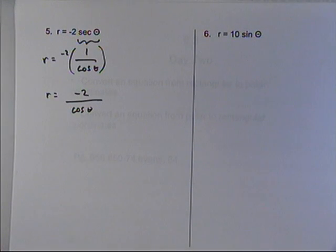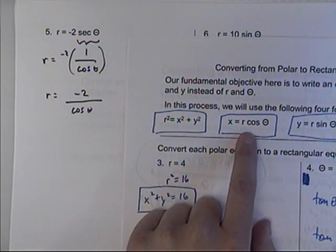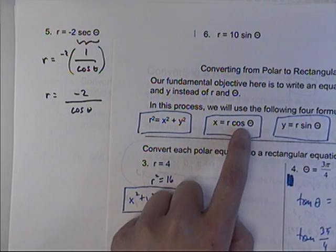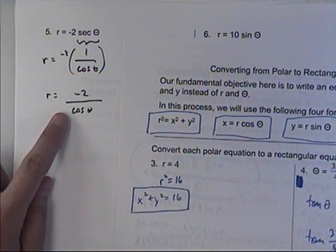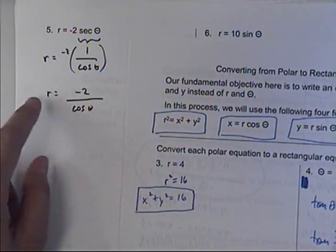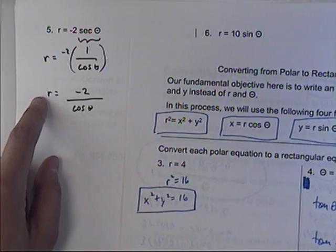Now, if you look at the formulas on the previous page, up here at the top, if I want to get to x, all I have to do is get r and cosine theta together. Over here, all I would have to do is multiply on both sides by cosine. Here they would cancel, and this side would give me r cosine theta.